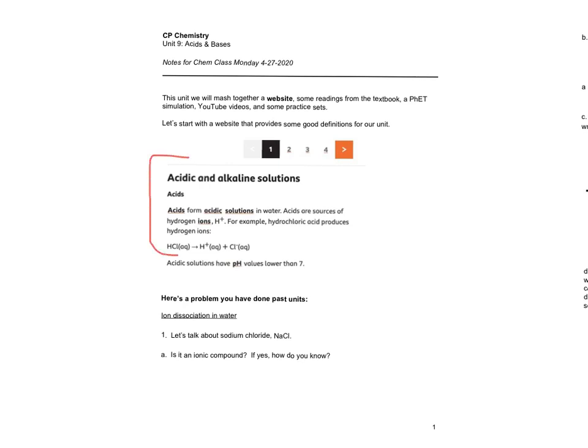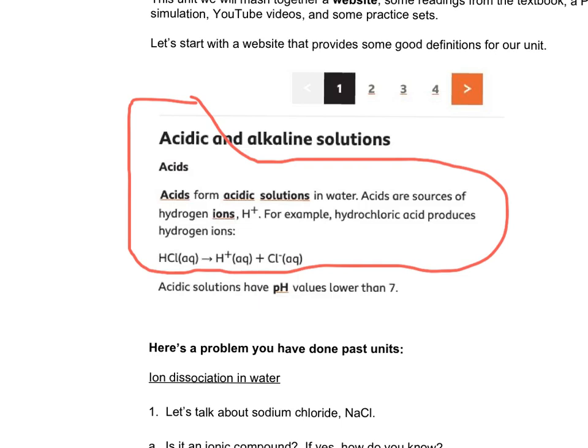So today what we're considering is we're considering the definition of an acid. So while this unit is called acids and bases, today's focus is just on acids and acidic solutions. So in the definition that you see here, it says acids form acidic solutions in water. It seems like it might be redundant, but the acids themselves can be solid in their molecules. And what happens is when you put them in water, these molecules separate to form ions. So you produce a hydrogen ion, H+, which is what they're mentioning here. And then you have an anion as well.